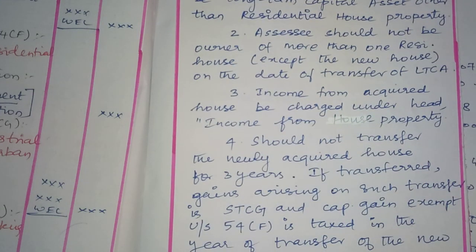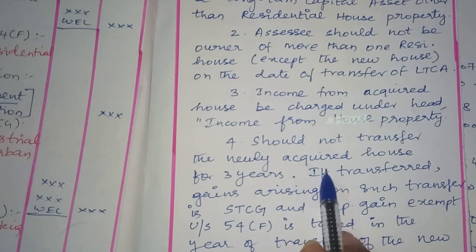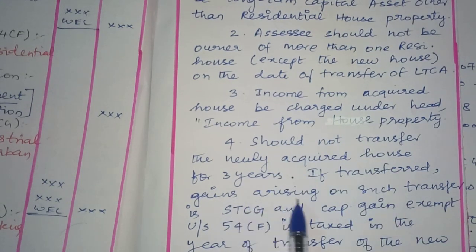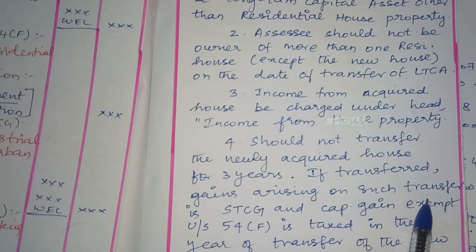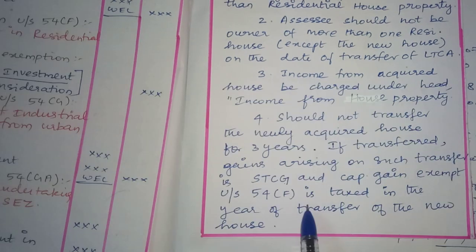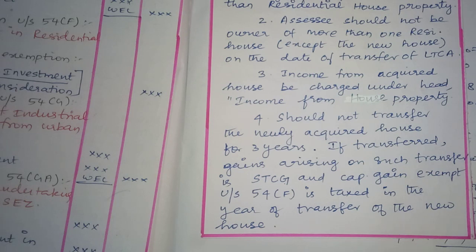Under Section 54 provisions, if you acquire a new house property, you should not transfer the newly acquired house within 3 years. If transferred, the gains arising on such transfer are treated as short term capital gain, and the capital gain exempted under Section 54 or 54F is taxed in the year of transfer of the new house. If you sell within 3 years after claiming an exemption, the full amount becomes taxable.